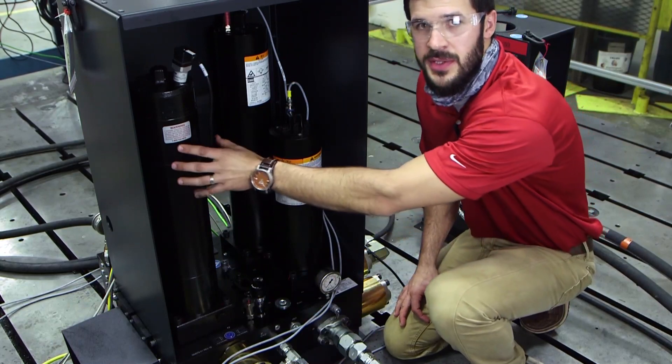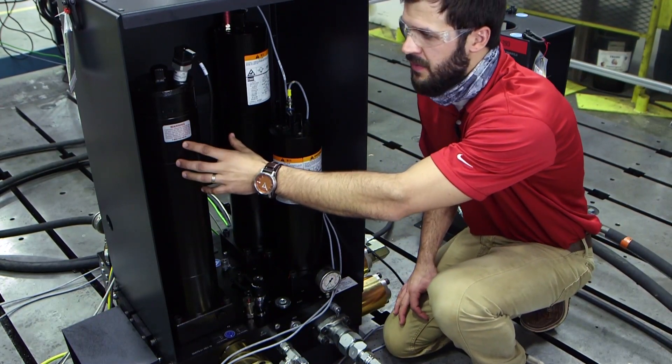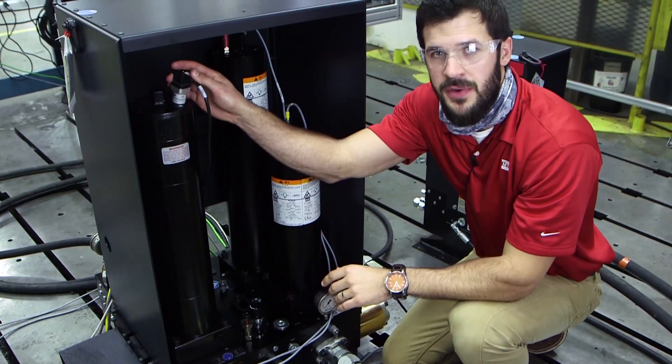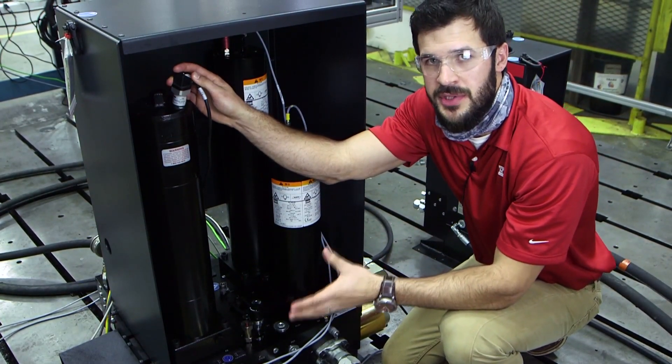So here it comes in. It goes into a high pressure filter, which is 25 microns, easily serviced and accessible. And it also has dirty filter indication that will let you know when it's time to change your filter.